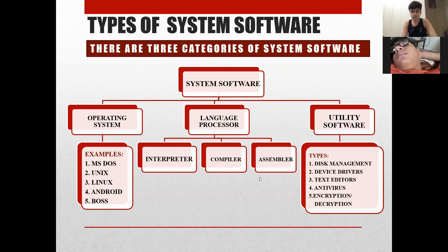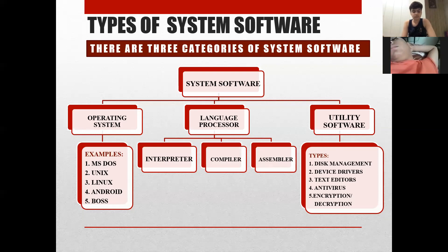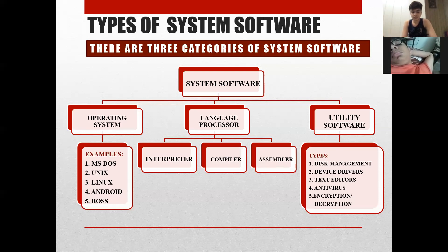What do you mean by assembler? What does assembler do? Assembler converts the code — the assembly language — into machine language.